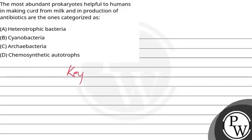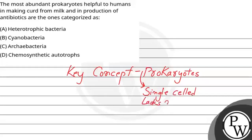Our key concept is prokaryotes. We will see which is responsible for making curd from milk and production of antibiotics. These basically are from our Monera kingdom, and these are single-celled organisms. They lack nucleus and organelle-bound membrane.